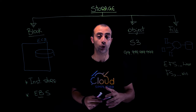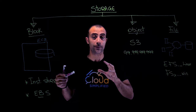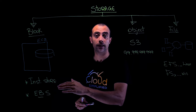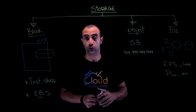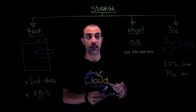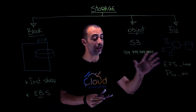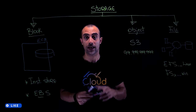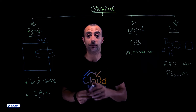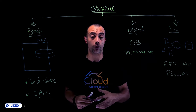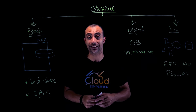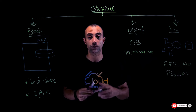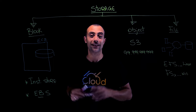To recap: we introduced three types of storage. Block storage with two options — instance store and EBS. Object storage with S3. And file storage with EFS for Linux and FSx for Windows. I hope you enjoyed this video. If you liked it, please give us a thumbs up, leave your comments, and subscribe to the channel so you don't miss any upcoming videos. Thank you so much for watching.